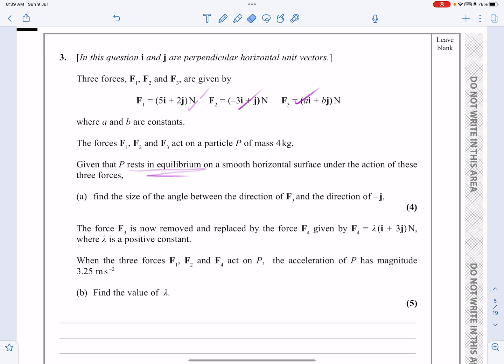So if it rests in equilibrium, then I should be able to work out what F3 is here, even though it's AI plus BJ. And once I've got that, it's asking me to work out an angle between F3 and minus J. Yeah, that's okay. We can do that. We just need to draw out a diagram, a quick sketch of that. But let's get going then.